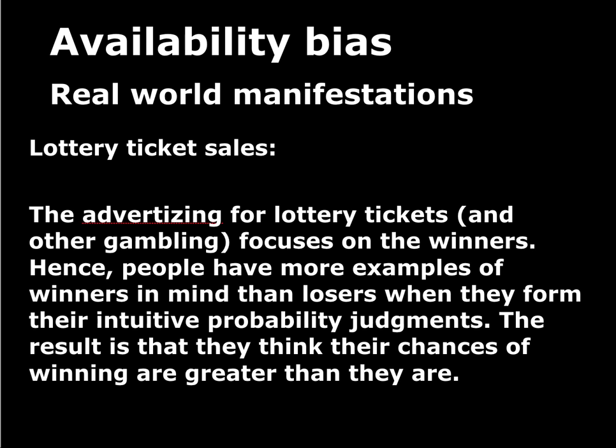The availability bias also manifests in lottery ticket sales. Advertising for lotteries or casinos focuses on winners — there's a big picture of someone who won a million dollars right above the slot machines. So the advertising makes examples of winners much more available than examples of losers. People can think of more examples of winning, which leads to inaccurate probability assessments of how likely they are to win, making them more likely to actually play.